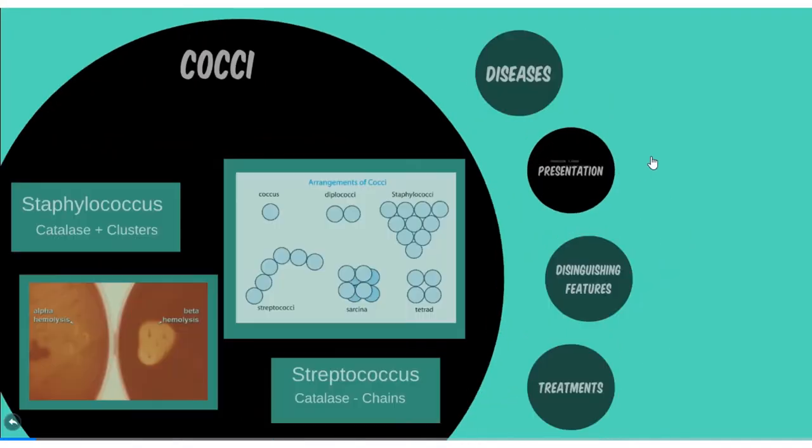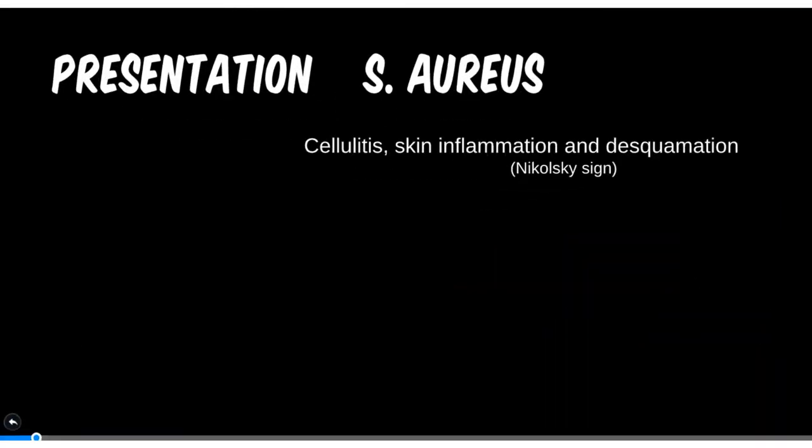There are quite a few pathologies related to Staph aureus — can you remember which ones are associated with this bacteria? How about if a patient comes in with a presentation of cellulitis, skin inflammation and disformation, with a possible Nikolski sign? There are actually two possibilities for this, and the patient's history is going to help with the early diagnosis of either toxic shock syndrome or staph scalded skin syndrome.